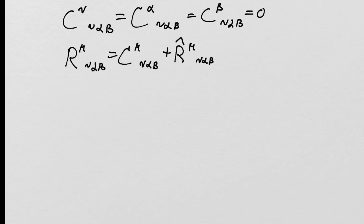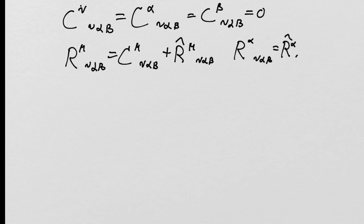Just as before, we are going to look for a decomposition of the Riemann tensor into a traceless piece and a part that has a trace. What this means is that the entire trace comes from the second part. So we would write: R alpha-nu-alpha-beta equals R-hat alpha-nu-alpha-beta, which is obvious because the traceless piece equals zero. So the trace of the Riemann tensor equals just the trace of the R-hat part.